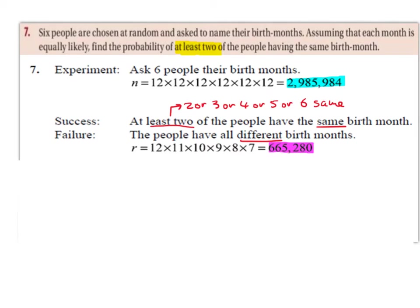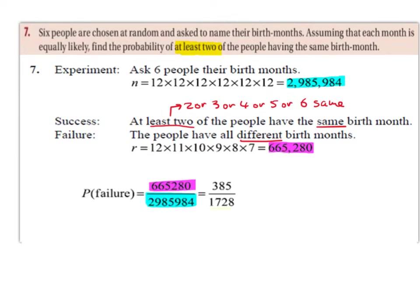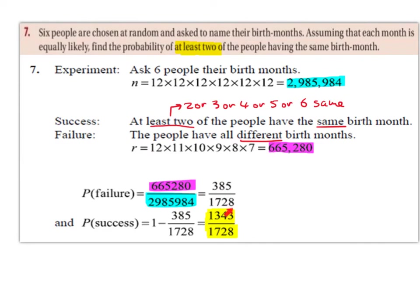Now all we have to do is divide these — the purple number goes over the blue number — and subtract from 1, because this is the failure but we're interested in the success. So dividing and simplifying, we get 385,000 over 1,728, and subtracting that from 1 we're left with 1,343 over 1,728. So this is the probability that at least two people of the six chosen have the same birth month. So again, if you hear the phrase 'at least' or 'at most', you want to think of using this whole idea of success and failure.